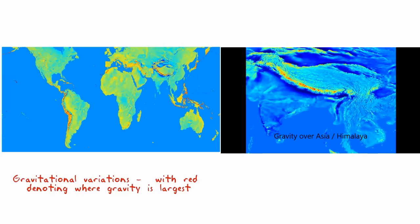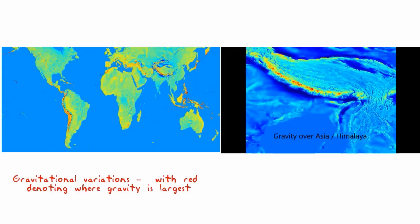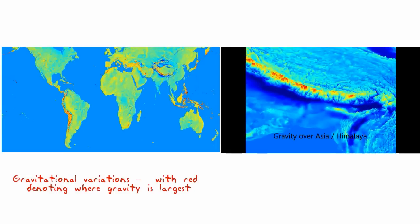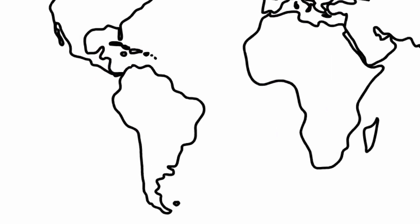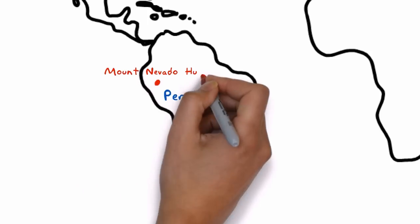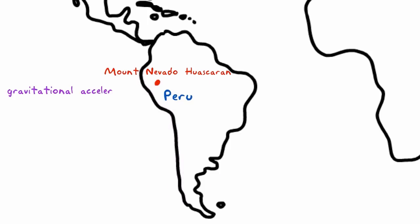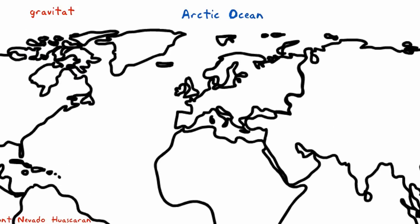But the new high-resolution map is able to pinpoint unexpected locations with more extreme differences. The map has more than 3 billion points covering 80% of Earth's landmasses. The model found that Mount Nevado Huascarán in Peru has the lowest gravitational acceleration at 9.7639 meters per second squared, while the Arctic Ocean has the highest at 9.8337 meters per second squared.